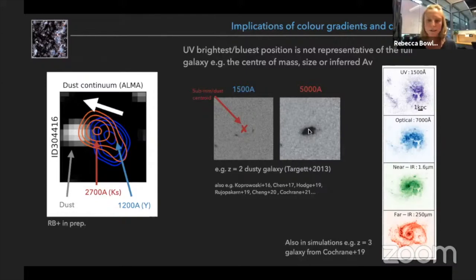As you go to longer wavelengths you start to see that in fact the center of mass of this source is actually where the dust continuum peak is. So in this right hand plot you can see the full galaxy is actually much more extended relative to the UV.